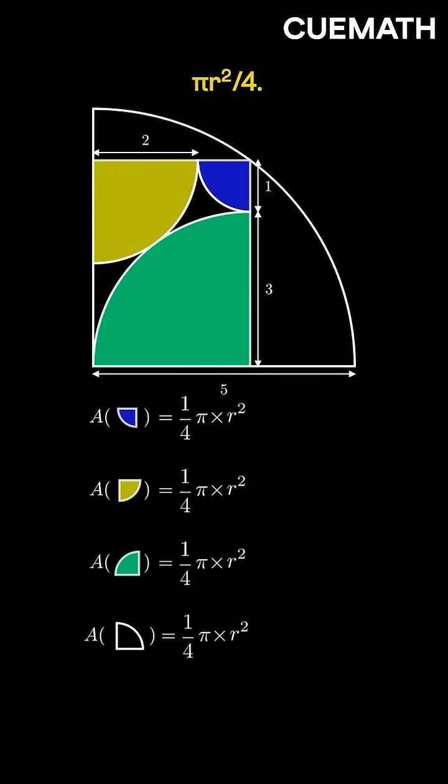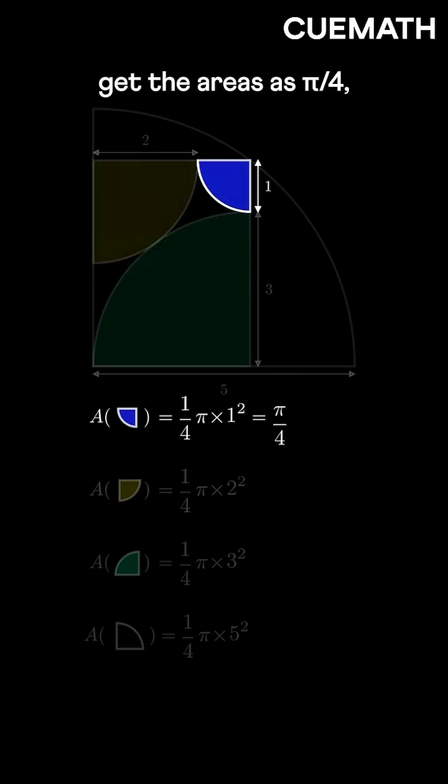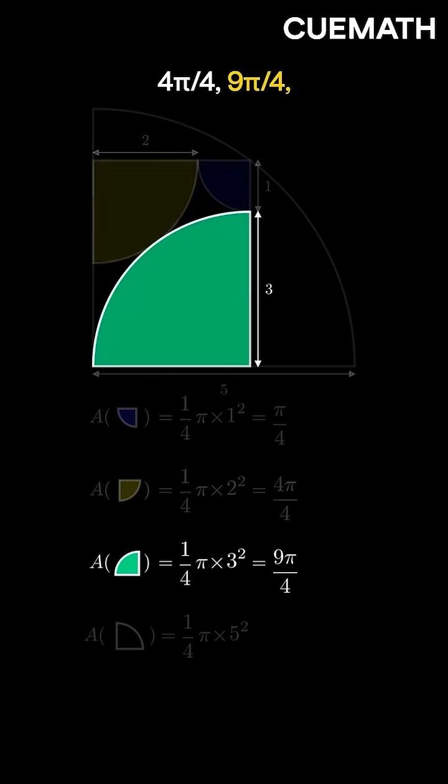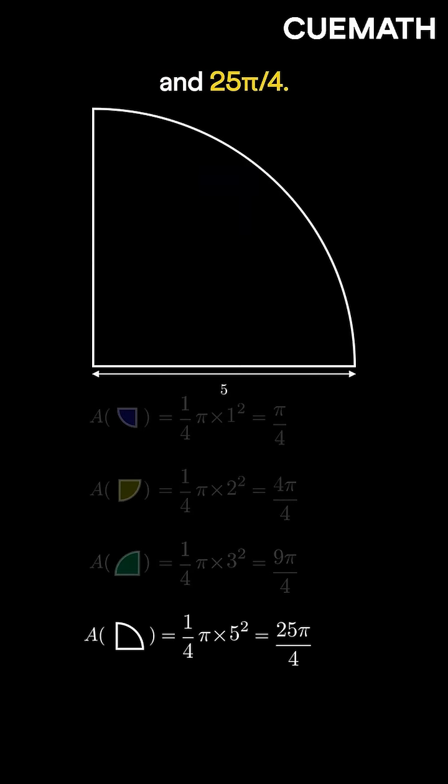Now the area of any quarter circle is pi r squared by 4. Using their radii, we get the areas as pi by 4, 4 pi by 4, 9 pi by 4, and 25 pi by 4.